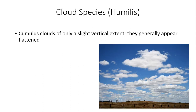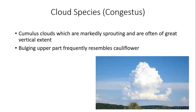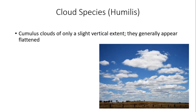There is also the cloud species humilis, which refers to cumulus clouds of only slight vertical extent that generally appear in a flattened shape. Looking at the bottom right picture of cumulus humilis, notice how flat these clouds are — just not much vertical development. A cumulus humilis cloud is associated with a fair weather day with high pressure in control, an inversion where temperatures increase with height, and generally stable conditions. Then there is cumulus congestus — this species is remarkably sprouting and often of great vertical extent. The bulging upper part frequently resembles a cauliflower. Humilis is flat and stable; congestus has much more vertical development and indicates an unstable atmosphere.